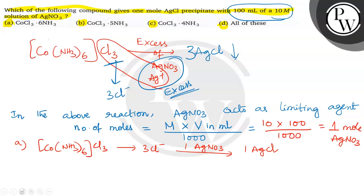If AgNO3 is excess, then we will get 3 moles, but AgNO3 is limiting agent.